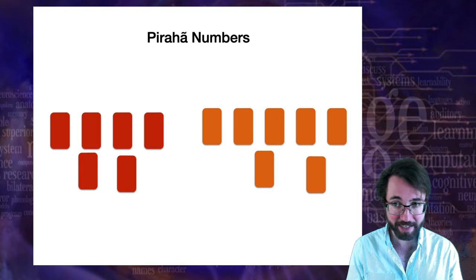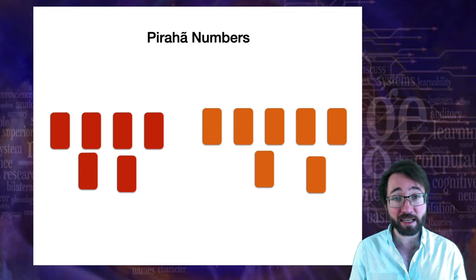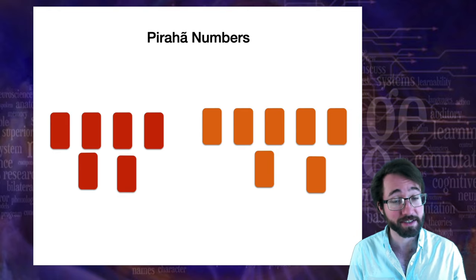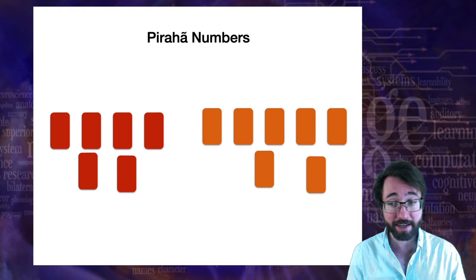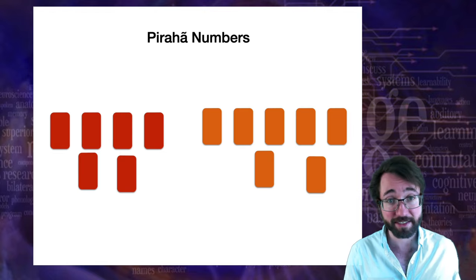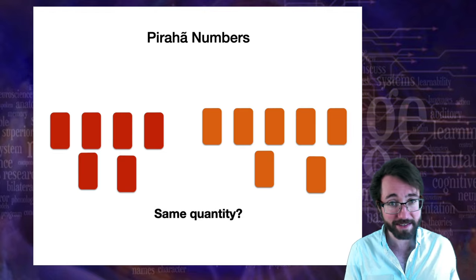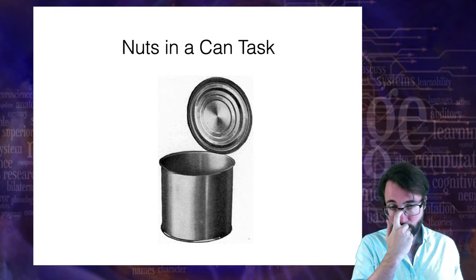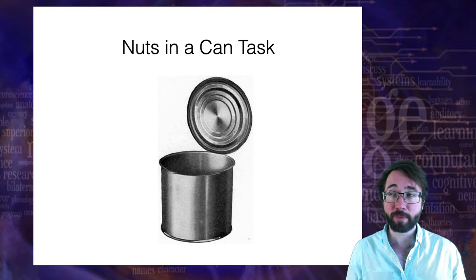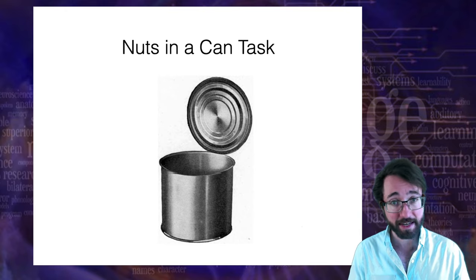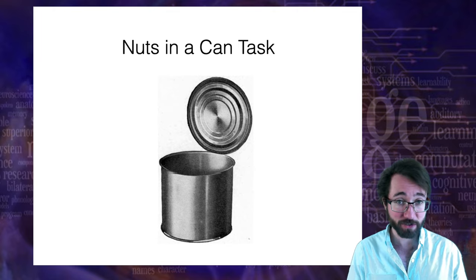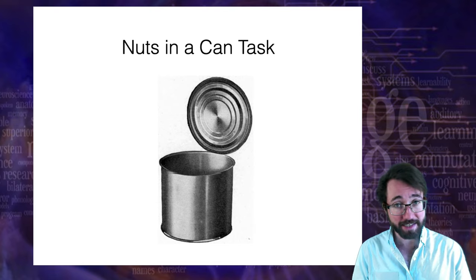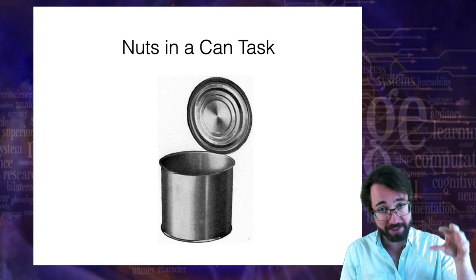The strong Sapir-Whorf hypothesis would say that yes, Piraha speakers are actually unable to distinguish between different numbers of things because they don't have words for it. The weak Sapir-Whorf hypothesis would say they probably can distinguish between these things but their language is going to influence how they do it in a potentially subtle way. The way numerical cognition of the Piraha has been tested is using something called the nuts-in-a-can task. You fly out to the rainforest, sit at a table with a can, and throw a bunch of nuts into the can.